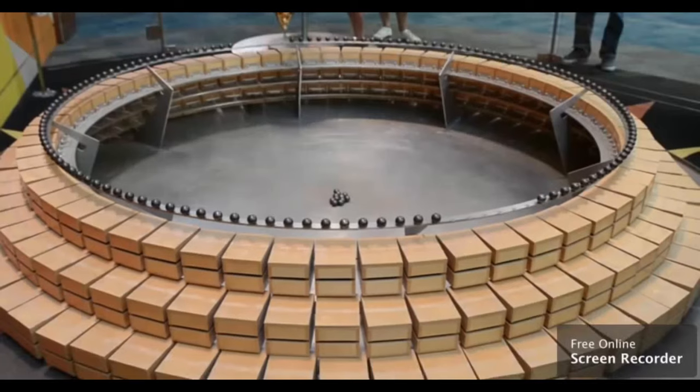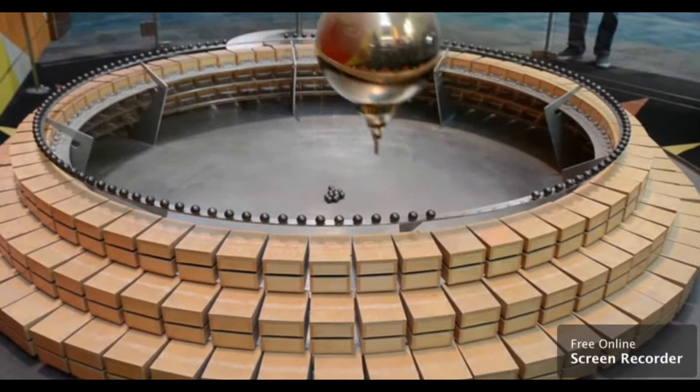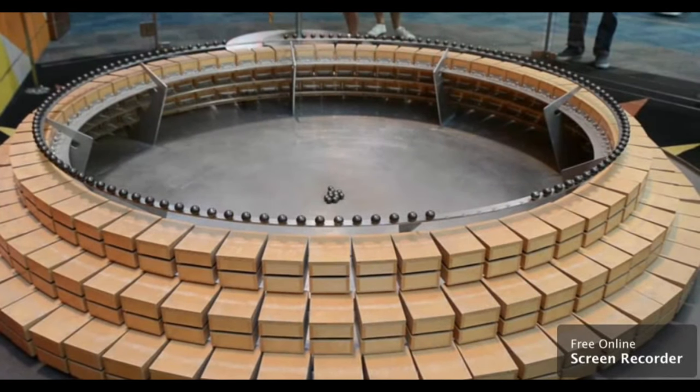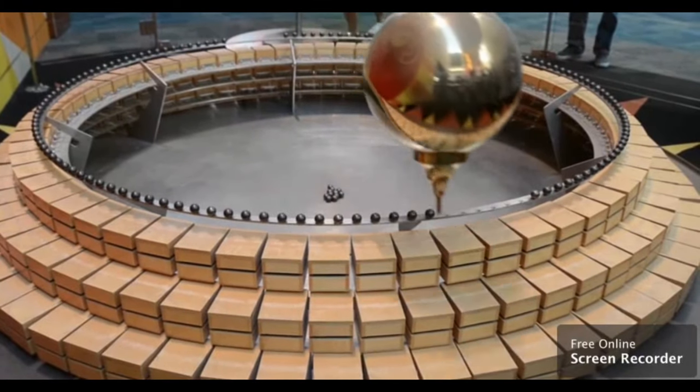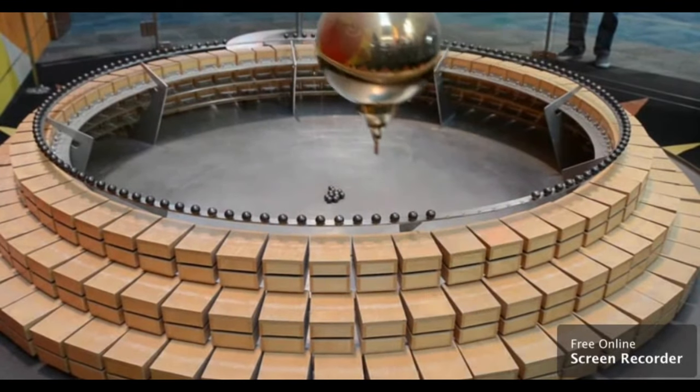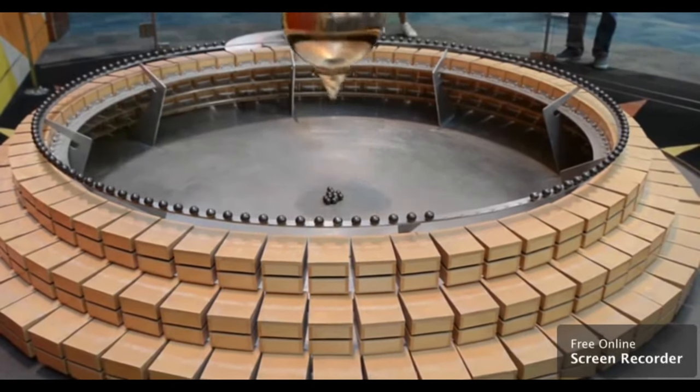The Foucault pendulum, which was introduced in 1851, was the first experiment to give direct evidence of the Earth's rotation. As the pendulum moves back and forth, the plane of the pendulum moves due to the Earth's rotation and the pendulum strikes the balls.